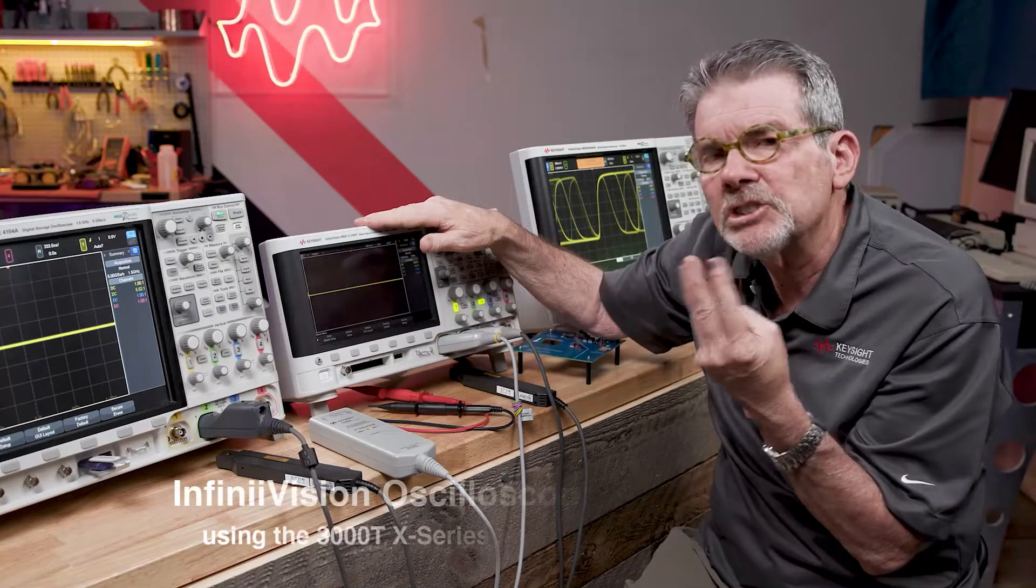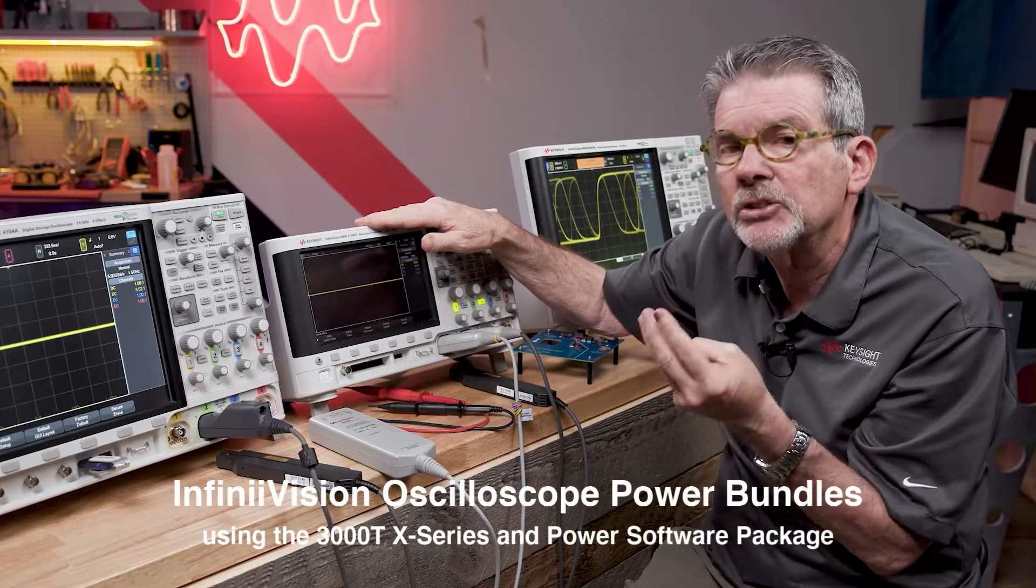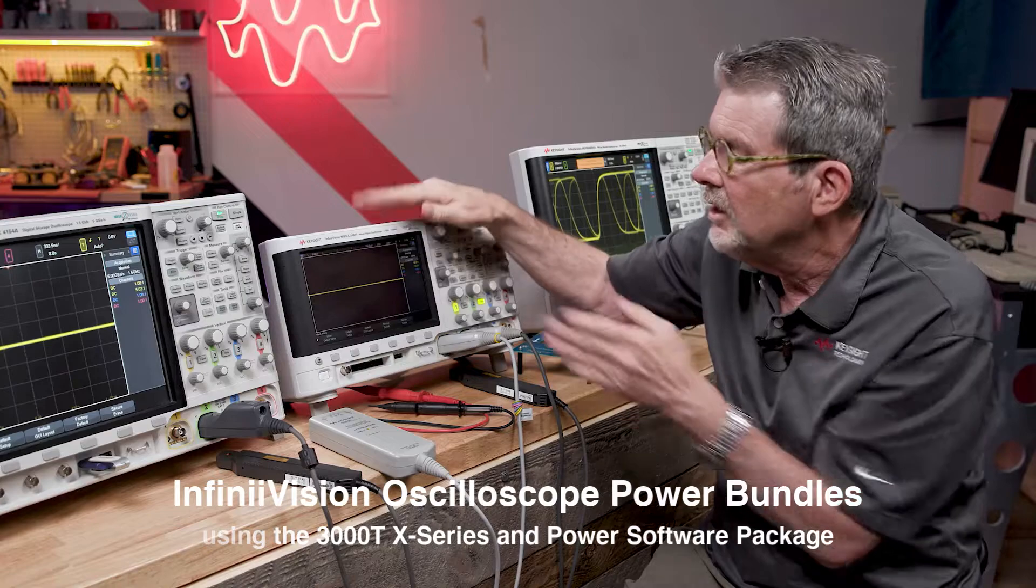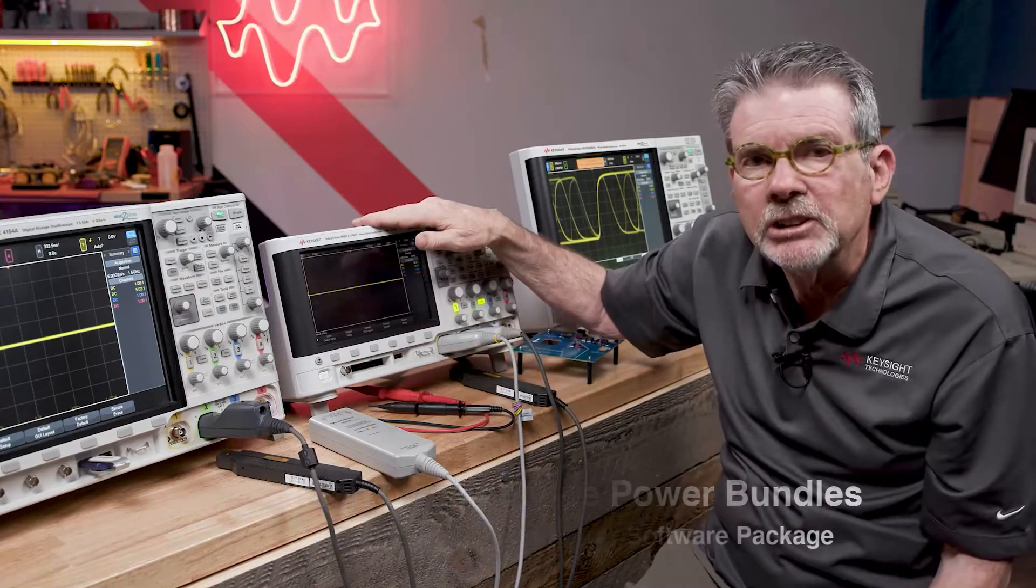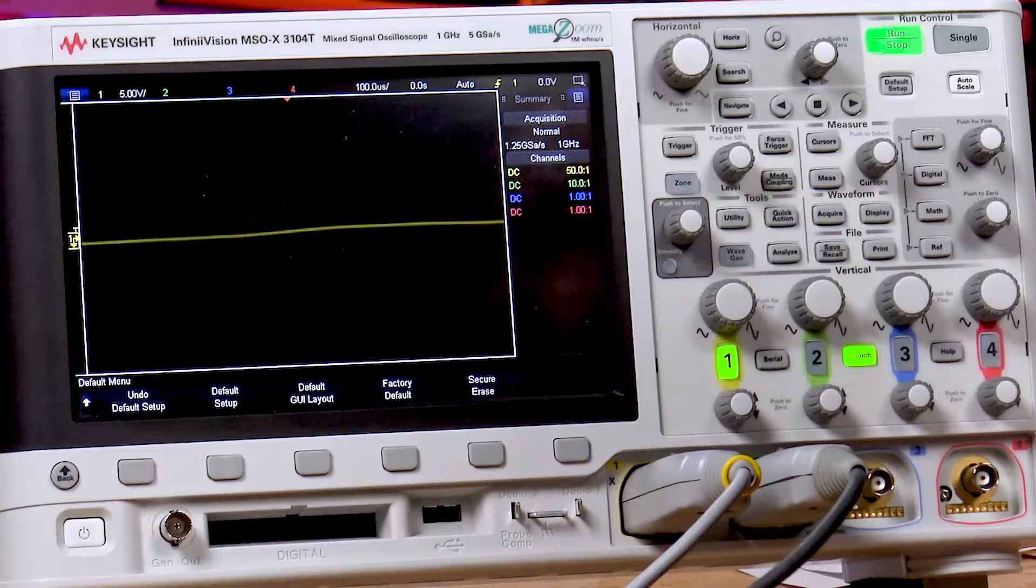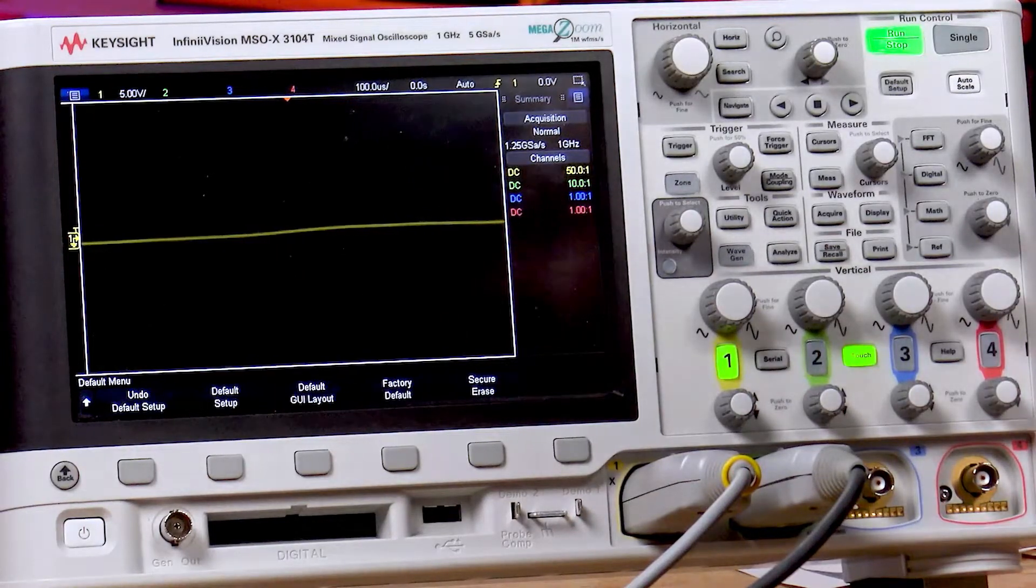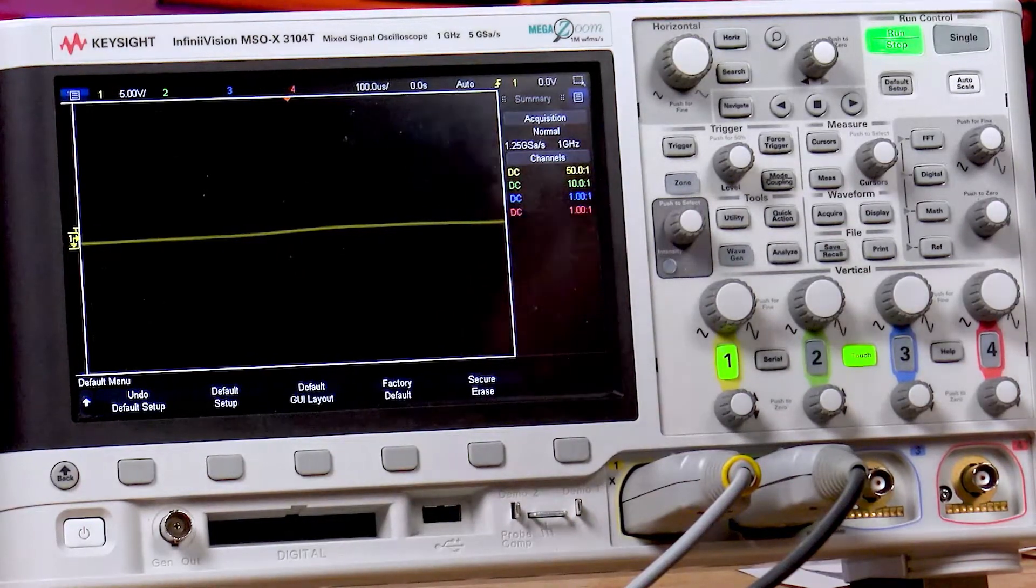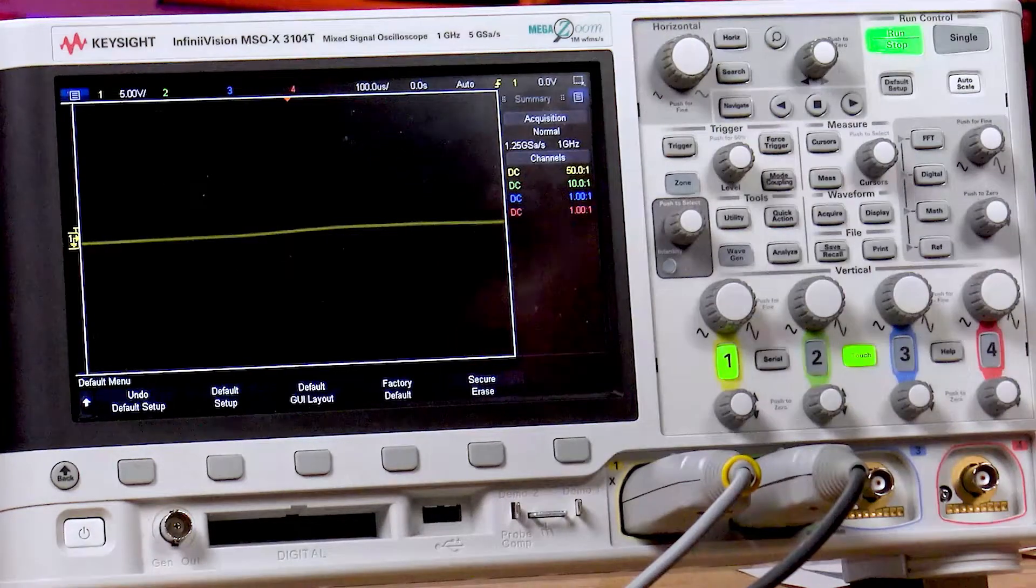We're going to do a demonstration of three different power supply testing measurements, and we'll start with the 3000T. I have my high voltage probe and my current probe connected to an AC to DC power supply. Right now, I'm connected to the AC input.